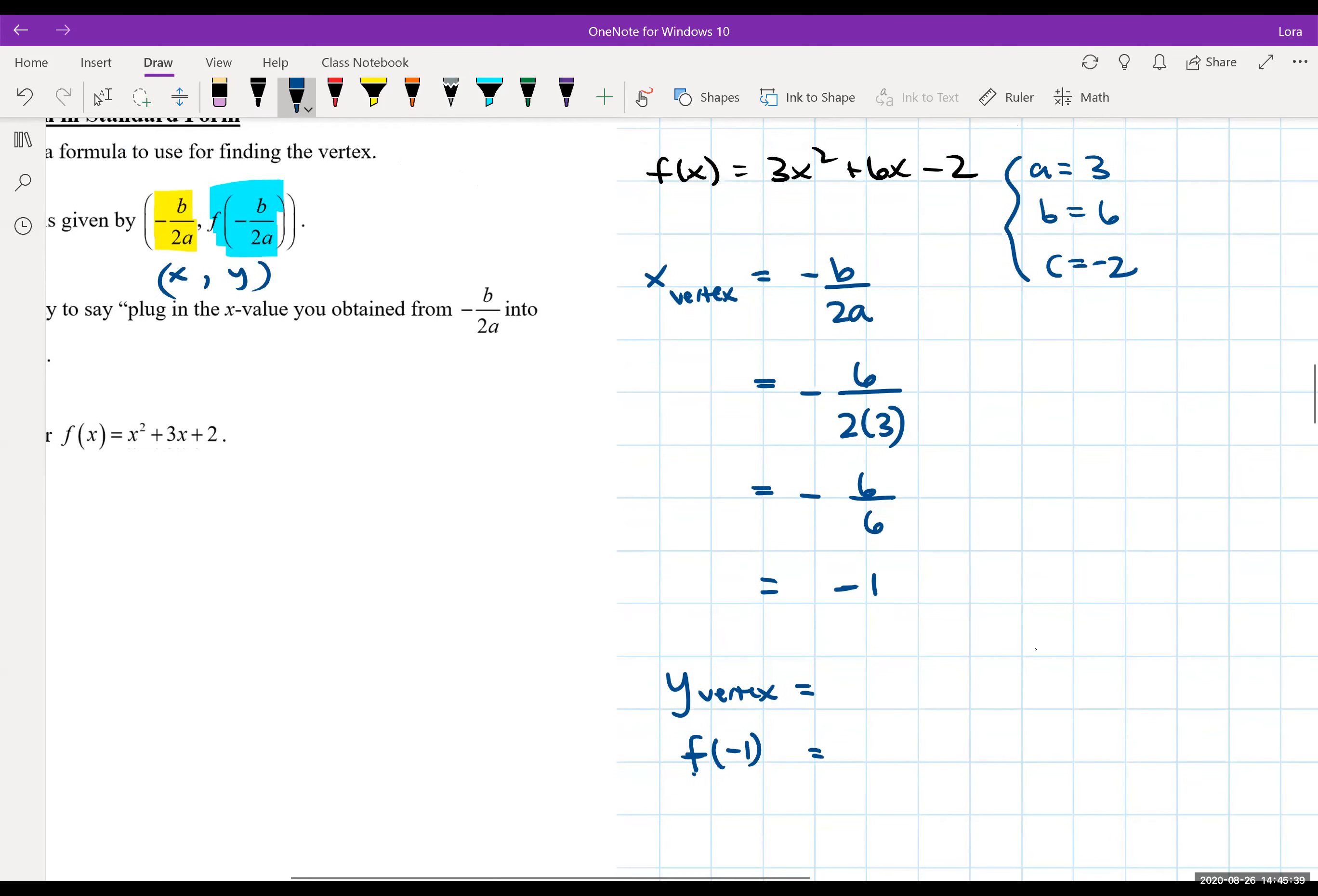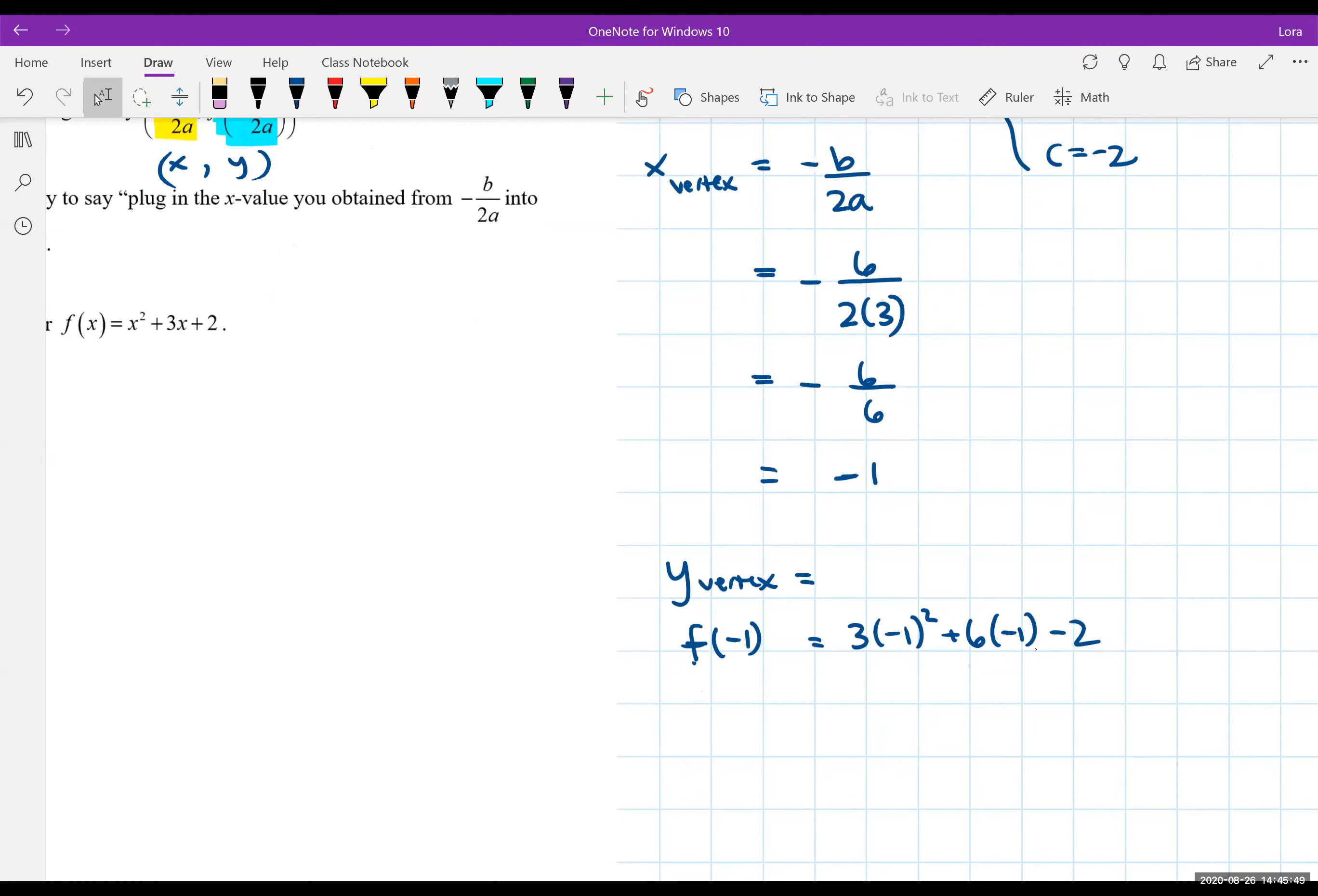We're going to plug it into 3x squared. So 3 times negative 1 squared plus 6 times negative 1 minus 2. Do a little bit of math. So we end up getting 3 times 1. Now 6 times negative 1 is negative 6 minus 2.